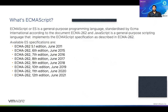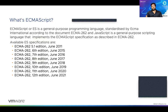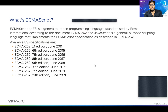So what is ECMAScript, and why are we talking about it today? ECMAScript is a general-purpose programming language standardized by ECMA International according to the document ECMA-262. JavaScript is a general-purpose scripting language that implements the ECMAScript specification as described in ECMA-262. So the difference between ECMAScript and JavaScript is that ECMAScript is a specification standardized in ECMA-262, while JavaScript is a programming language that implements that specification.